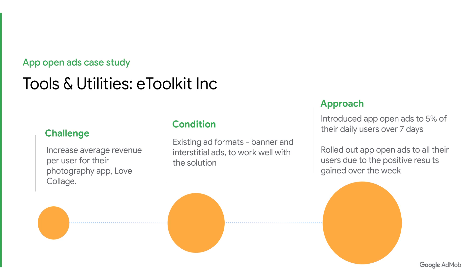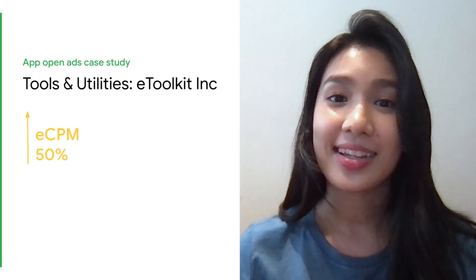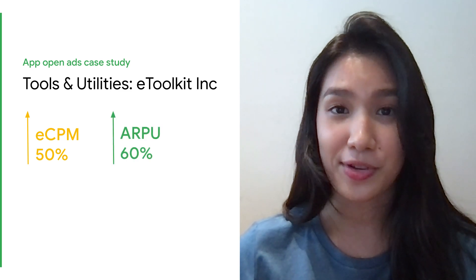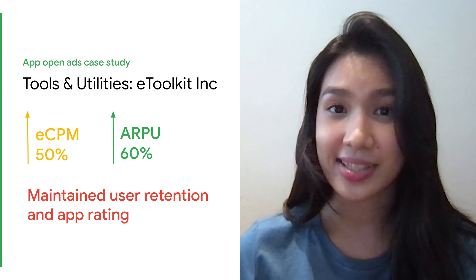The team first tested it among 5% of their daily users over 7 days and saw great results. This led them to roll out AppOpenAds to all their users. The outcome was quite impressive: they achieved a 50% eCPM increase, a 60% boost in average revenue per user, and maintained user retention as well as app rating. Now that we have talked about what AppOpenAds are and how they can help you unlock new ad placements to earn more revenue, let's move on to some common questions about this new format.